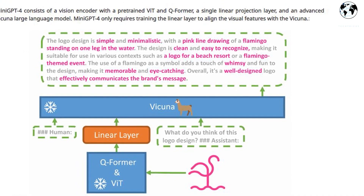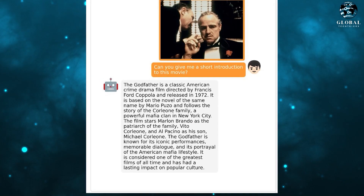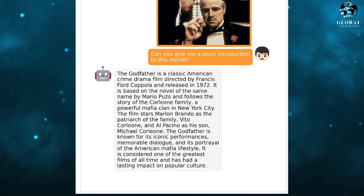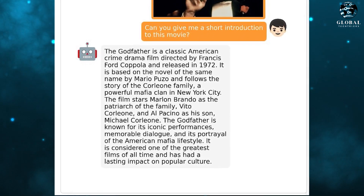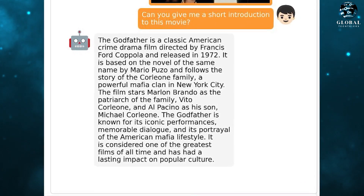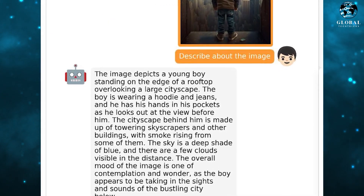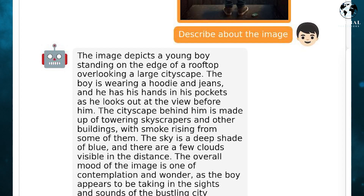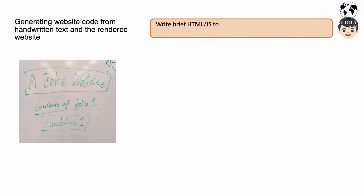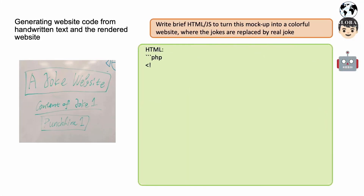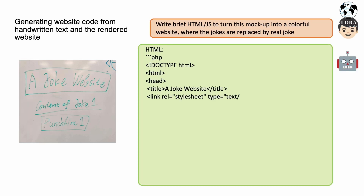In simpler terms, Mini GPT-4 empowers users to upload any random picture and receive a detailed description of what's happening within it. This groundbreaking technology brings a new level of understanding and interactivity to AI, as it can analyze and interpret visual content with impressive accuracy.